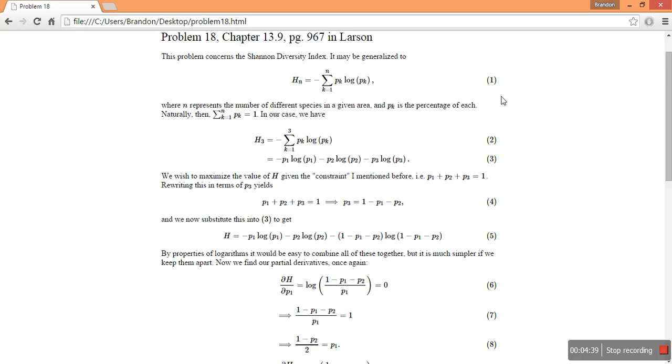So this problem deals with the Shannon Diversity Index, which I did a bit of research and I found that it could be generalized to an equation that looks like this. In the problem they only give us three variables.